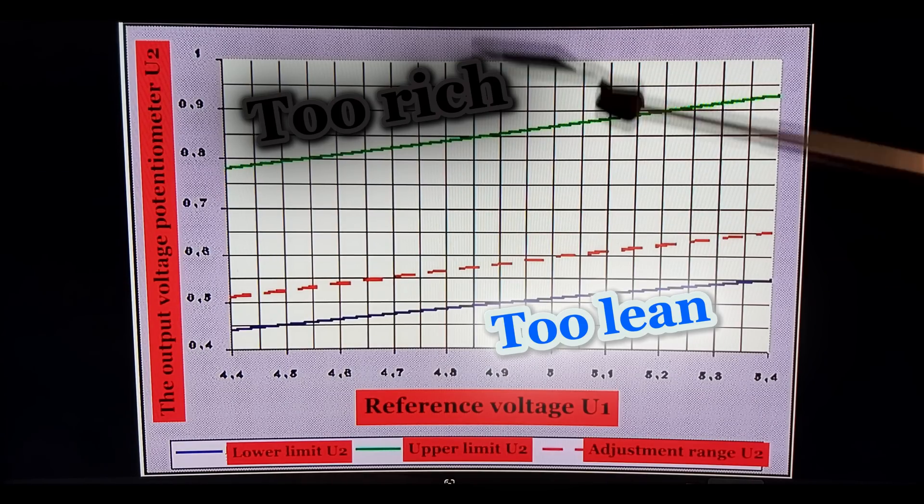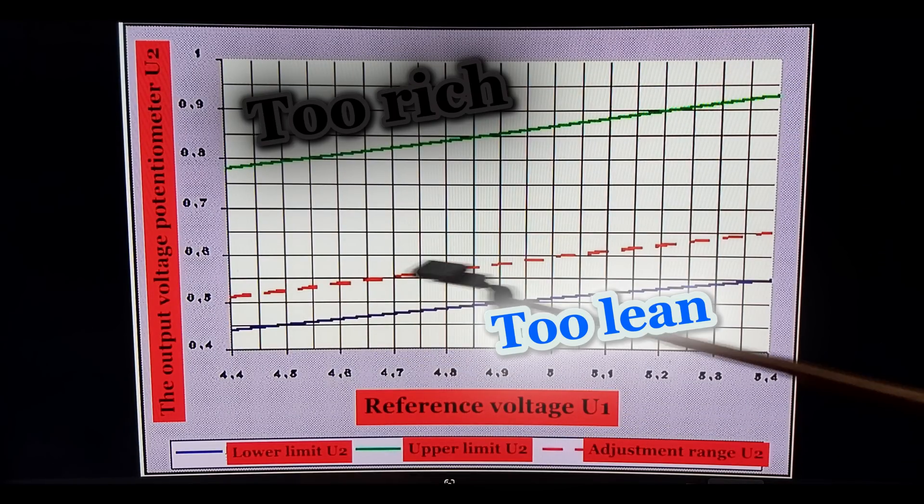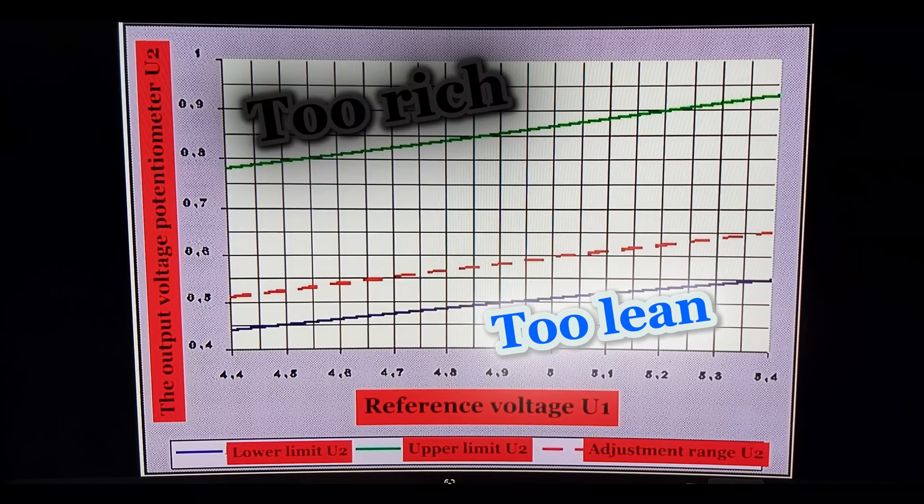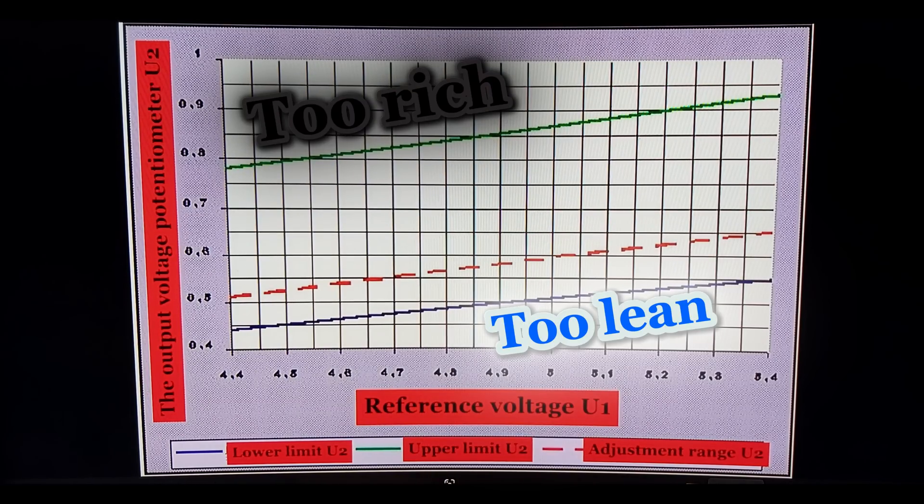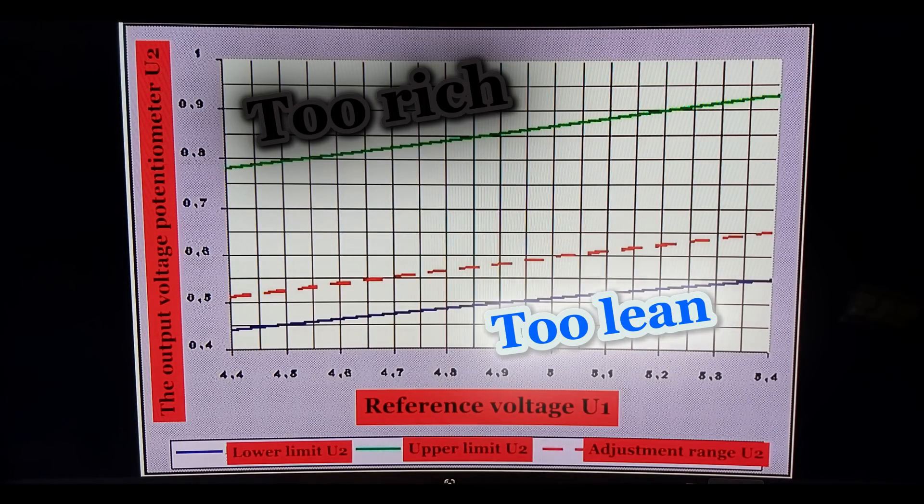So your mixture is never going to be either too rich or too lean. That's why I wanted to clarify that post you've seen, I hope you've seen, to explain why 0.7 volts and what's the meaning of all of this. Thank you.